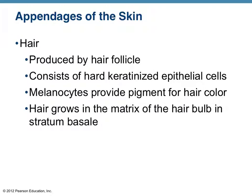A little bit about hair: it is obviously produced in the hair follicle, which you should be able to identify. Hair is made of specially keratinized epithelial cells — it's actually a product of cells. Melanocytes, depending on genetics for the most part, are what provide pigment for the color of hair. You've probably got up to a dozen or more genes that actually contribute to your hair color.